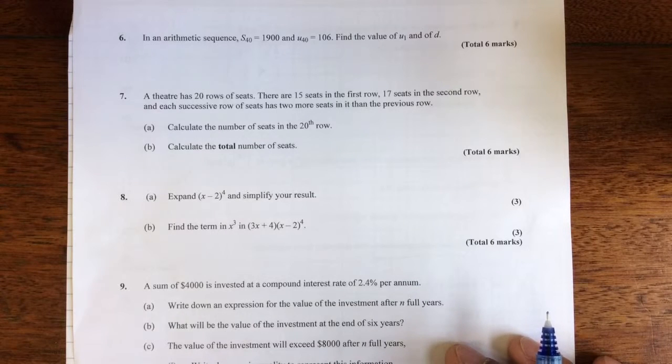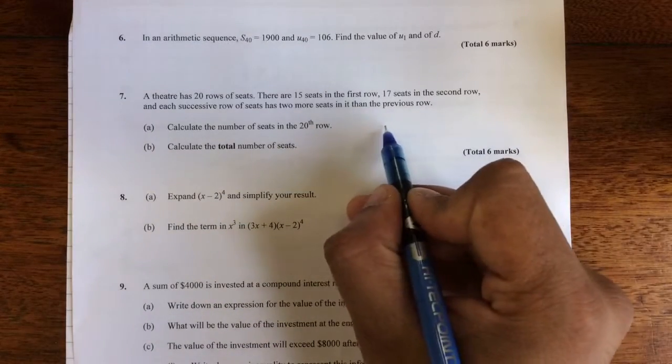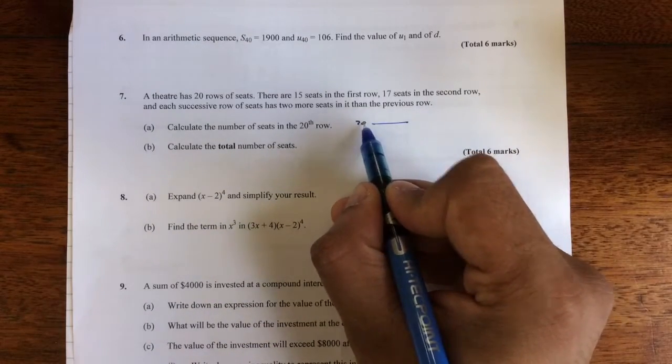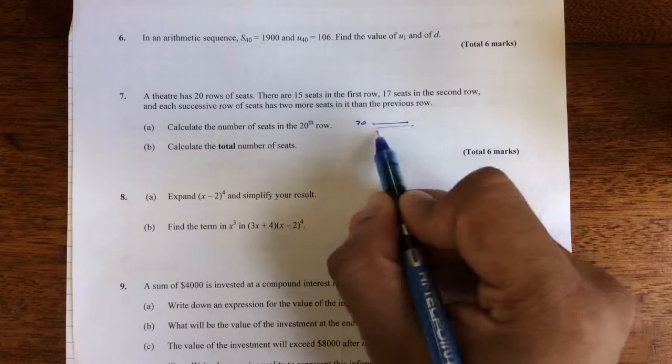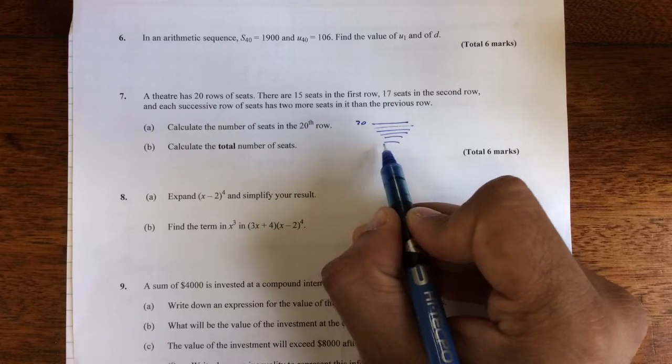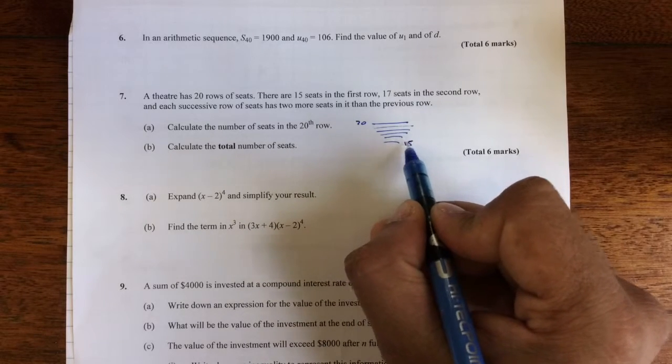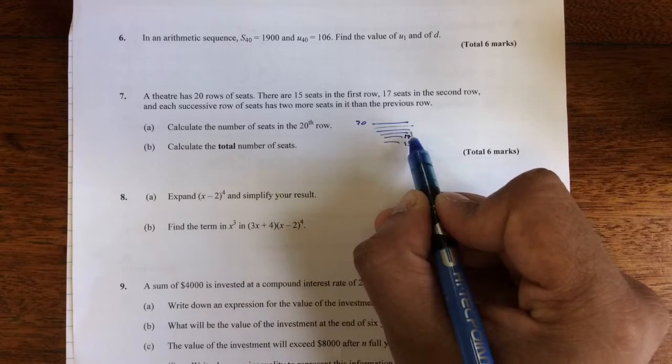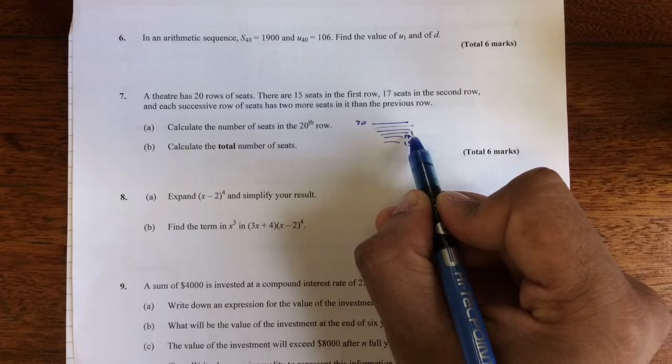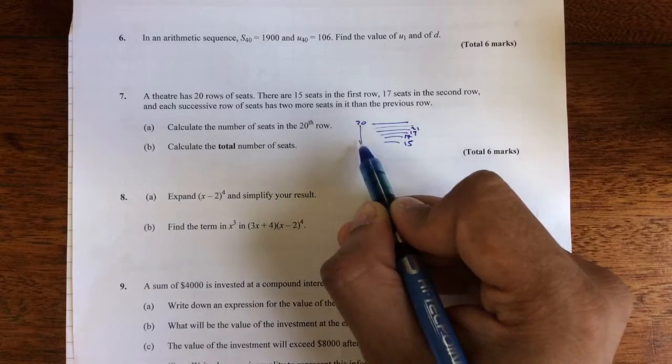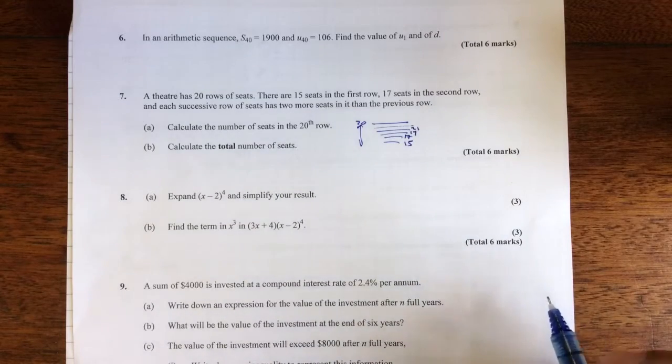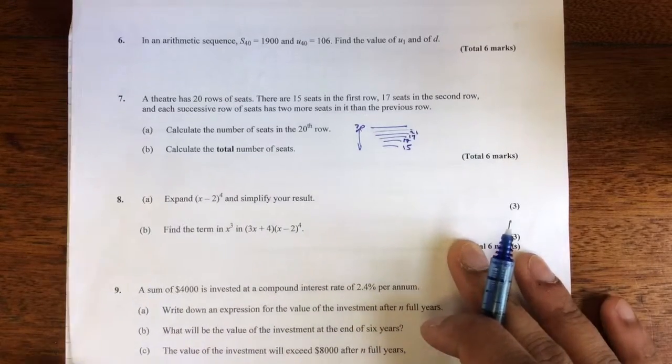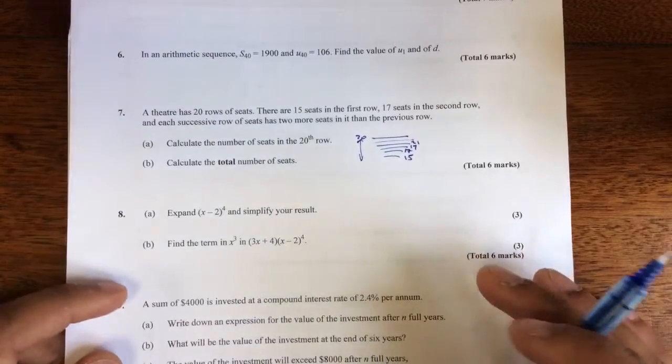So the first thing you're looking at that, you think, right, there's 20 rows of seats. So 1, 2, 3, 4, okay, all 20 rows. 15 in the first row, 17 in the second, and each one, so 19, 21, okay, and there's a total of 20 rows. Okay, so I can imagine that. Now, I think that must be an arithmetic progression with a common difference of 2.